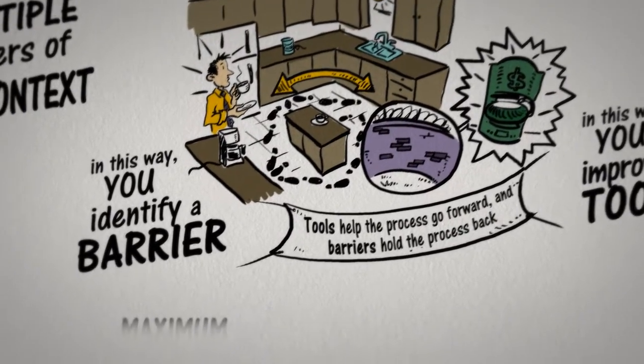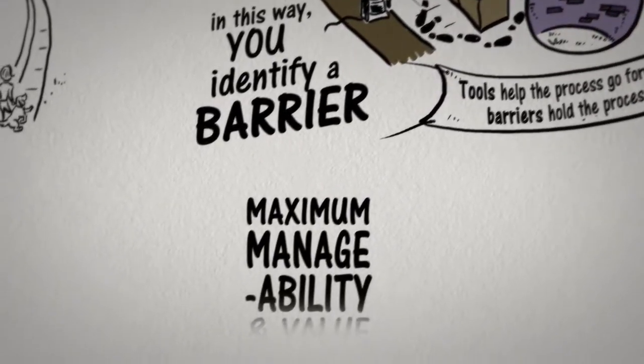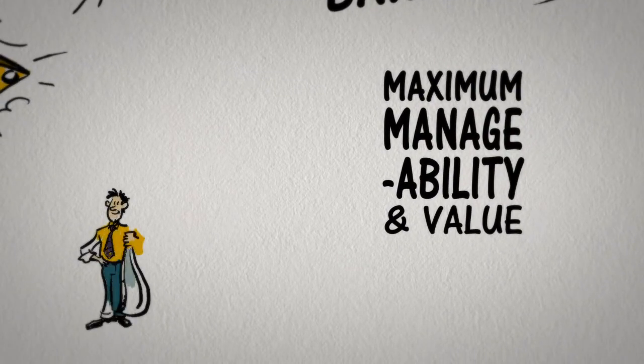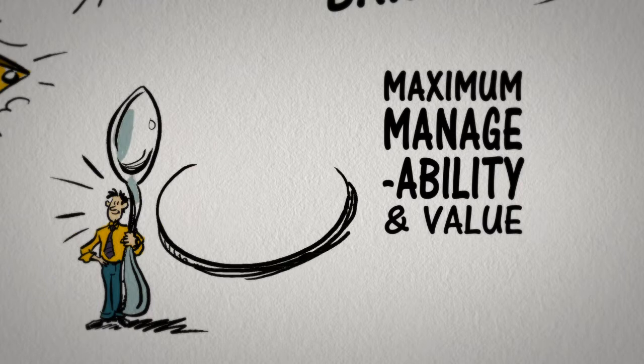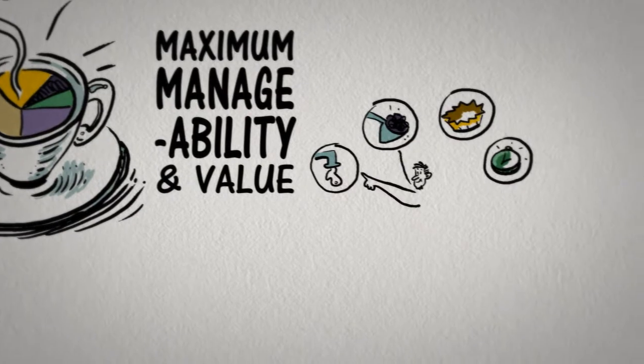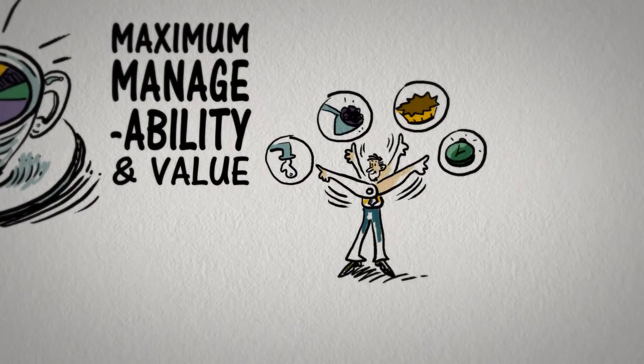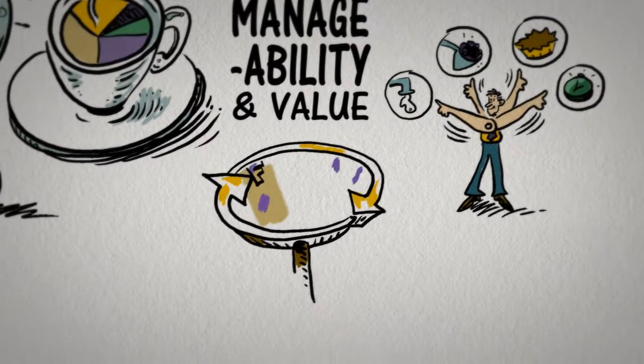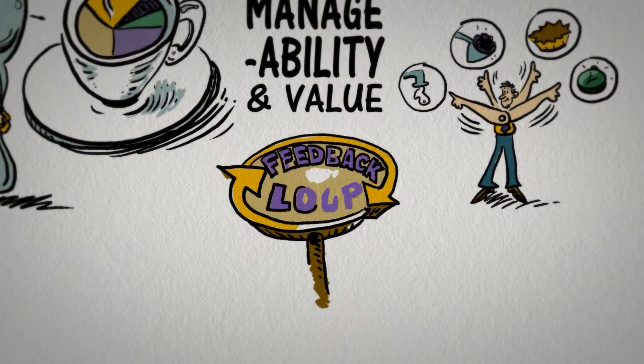You design the system for maximum manageability and value. A more manageable system is one that requires less intervention to achieve the desired benefits. You also regulate the system by controlling every step. At each step, you observe the output and then adjust the process as required. This is called a feedback loop.